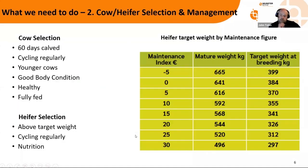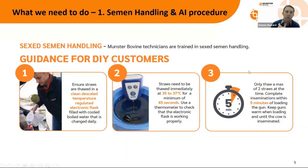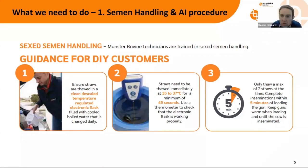If you're in the habit of loading the gun with your conventional semen and then going into the yard and throwing the cows into the crush, that game is over. You have to have the cows in the crush before you get the semen ready. If the technician is coming in and has thawed two straws, make sure the two cows are in the crush so he can AI them quickly. You can't spend two minutes chasing the cow around the yard. Whether you're DIY or using a technician, you want to get the straw in as quickly as possible.